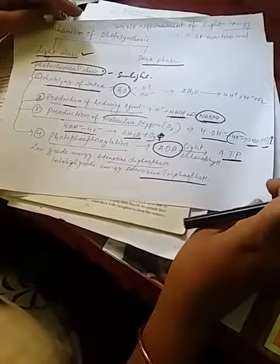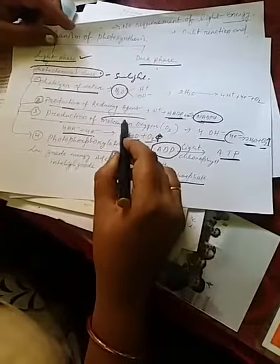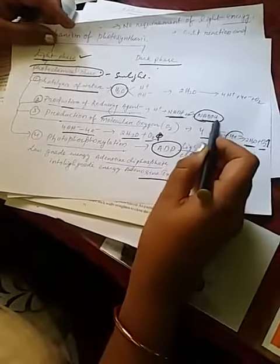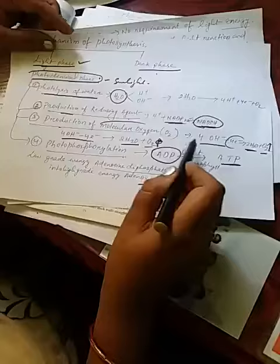So, this is all about the mechanism of light phase that photolysis of water, production of reducing agent NADPH and production of molecular oxygen O2 and photophosphorylation.